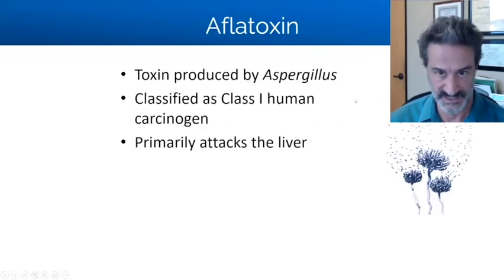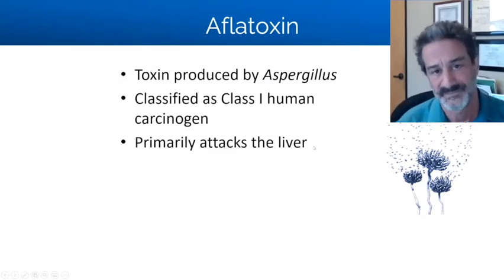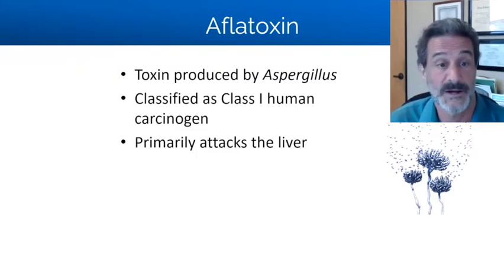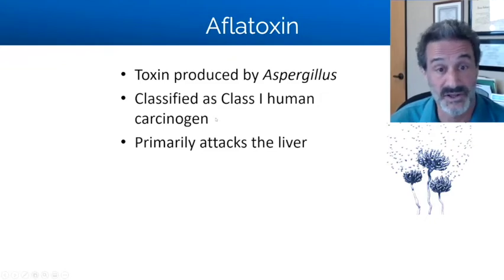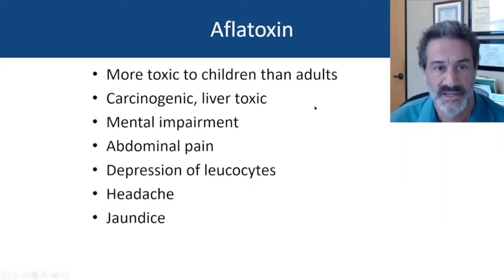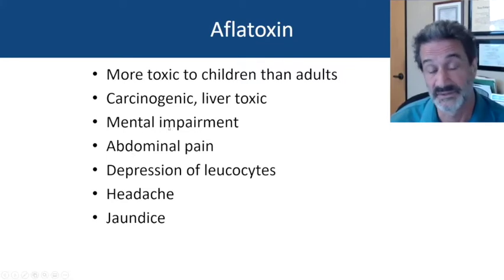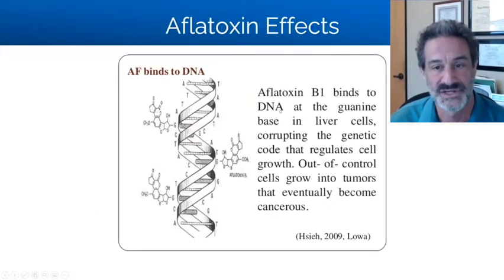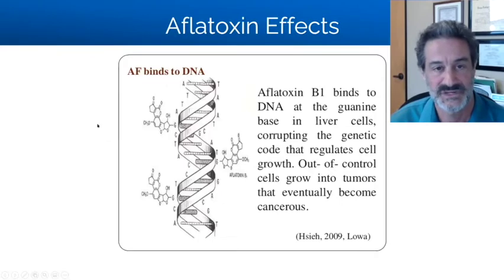Aflatoxin is really bad stuff — one of the most carcinogenic substances known, produced by aspergillus. There have been deaths in groups of people because of aflatoxin contamination of nuts, peanuts, and grains. It's really bad for the liver and can cause liver failure. It's more toxic in children because of body mass. It can cause mental and abdominal impairment, abdominal pain, immunosuppression, and because of the heavy liver burden, you can get jaundice and frank liver failure. It can also be carcinogenic because it literally disrupts the DNA.